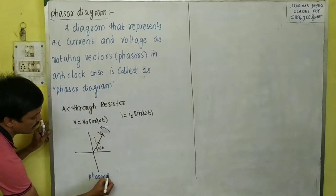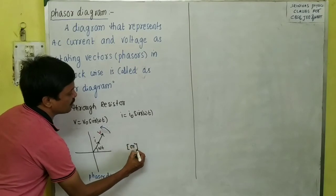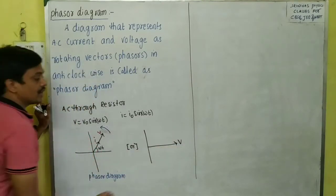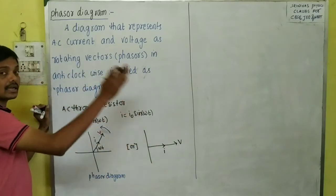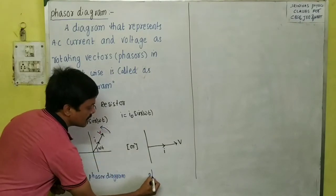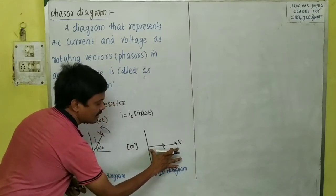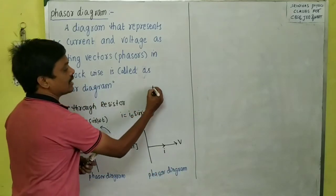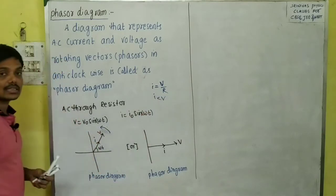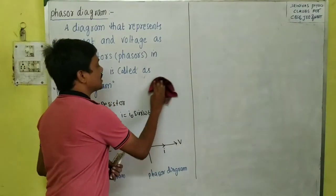In the phasor diagram, voltage and current are in the same direction. You can draw them either along the x-axis or y-axis. One important point: the voltage phasor has a larger length vector while the current phasor has a smaller length, because current is obtained by dividing voltage by resistance. So the current value is always less than V, meaning the voltage vector is longer and the current vector is shorter.